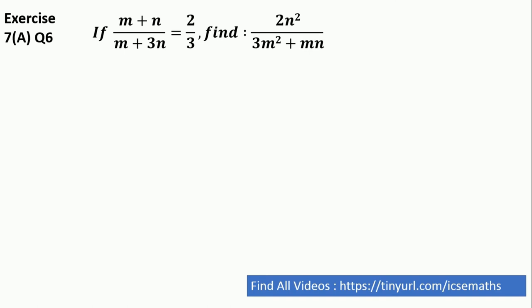It's very simple friends. In this kind of question we just need to find out a certain value, either we can find m or we can find n and that's it. So the question is saying if m plus n oblique m plus 3n is equal to 2 by 3, then we can also write this equation as 3m plus 3n is equal to 2m plus 6n.